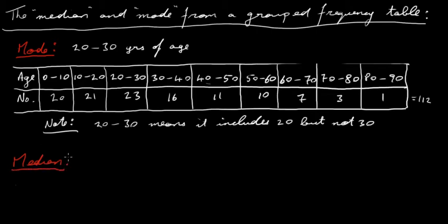Median then is the other one I'm going to do. So where does the median occur? Within which of these ranges does the median occur? If we look at our frequency here, we have 20, 21, 23 people, 16 people, 11 people, and so on. So that's a total of 112 people.